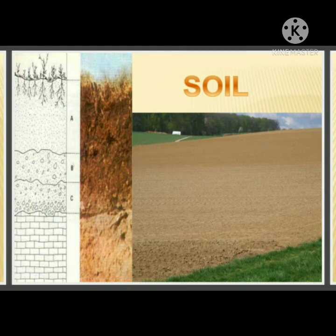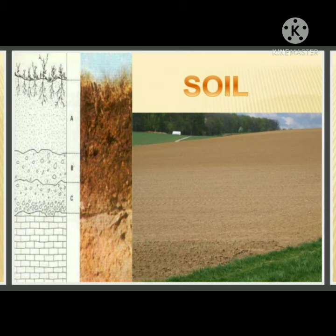Soil is one of the most valuable resources. It is an abiotic resource that is renewable. It determines the quality of land and forms the basis of agriculture. It provides support and nourishment to plants, and in turn animals and humans get food from the plants. The thin topmost layer of the earth's crust, made up of fine rock particles and organic matter, is termed as soil.